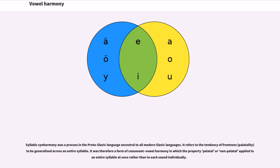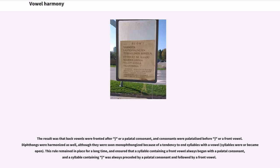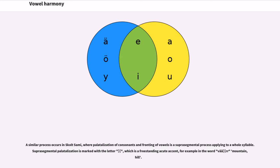Syllabic synharmony was a process in the Proto-Slavic language ancestral to all modern Slavic languages. It refers to the tendency of frontness to be generalized across an entire syllable — a form of consonant-vowel harmony in which the property palatal or non-palatal applied to an entire syllable at once. The result was that back vowels were fronted after J or a palatal consonant, and consonants were palatalized before J or a front vowel. Diphthongs were harmonized as well, though soon monophthongized. A similar process occurs in Skolt Sami, where palatalization of consonants and fronting of vowels is a suprasegmental process applying to a whole syllable, marked with a freestanding acute accent.